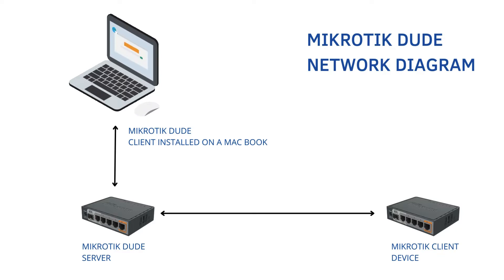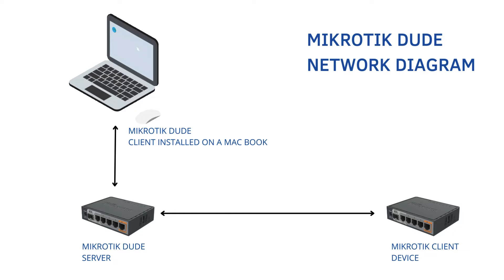I've come up with a network diagram that simply depicts what we're actually trying to achieve here. We've got a laptop where we're going to install the MicroTik Dude client software, and then we've got a MicroTik Dude server, which can actually be a physical or virtual router, and also a MicroTik client device. In my case, I'm going to be using a router as a client device. So in the end, the diagram shows a laptop attached to the Dude server, and a MicroTik client device attached to the MicroTik Dude server. I'm going to be using the Cloud Hosted Router as well as VirtualBox, because I don't have physical devices near me.